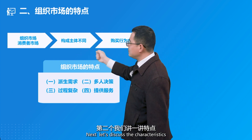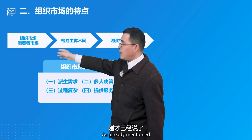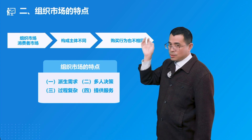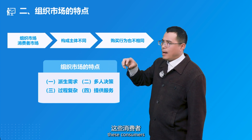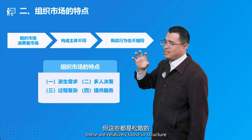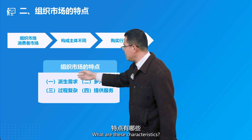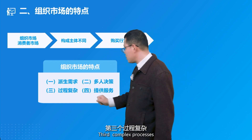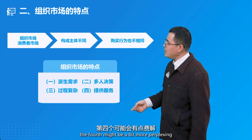Next, let's discuss the characteristics of organizational markets. Organizational markets differ from consumer markets in their primary constituents — they are highly structured and consist of organized individuals or groups, as opposed to the relatively loosely structured consumer market. The four key characteristics are: first, derived demand; second, multiple decision makers; third, complex processes; and fourth, provision of services. The first three are easier to understand; the fourth may be more perplexing.